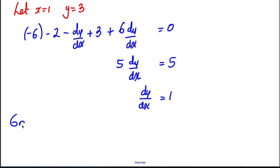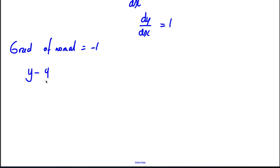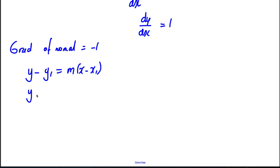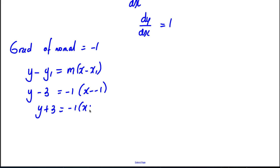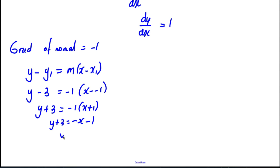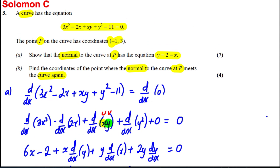That's the gradient of the tangent, so the gradient of the normal is the negative reciprocal, which is -1. Now using y - y₁ = m(x - x₁) with the point (-1, 3) and m = -1: y - 3 = -1(x - (-1)), so y - 3 = -x - 1, and therefore y = 2 - x, which is what we were looking for.